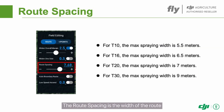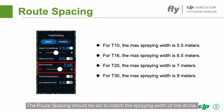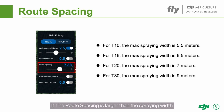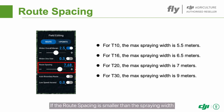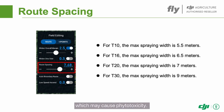The route spacing is the width of the route, that is, the distance that the agri-drone moves laterally. The route spacing should be set to match the spraying width of the drone. If the route spacing is larger than the spraying width, some areas will not be sprayed. If the route spacing is smaller than the spraying width, some areas will be sprayed multiple times.